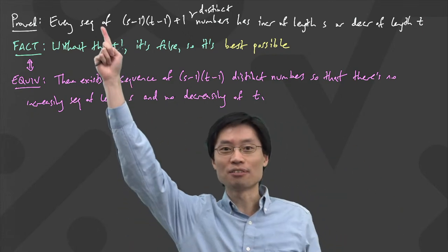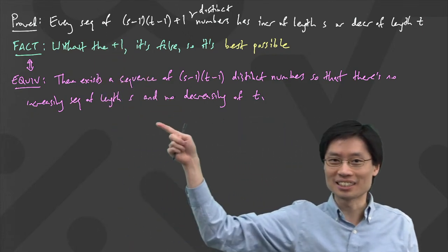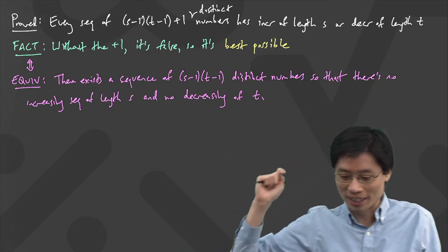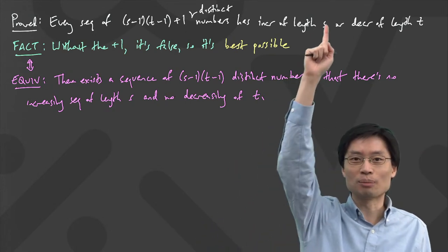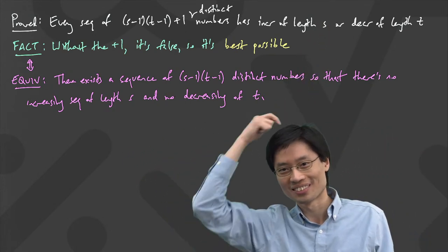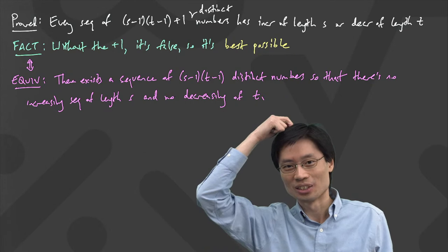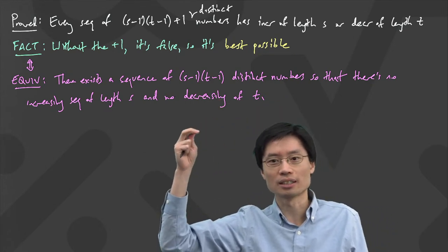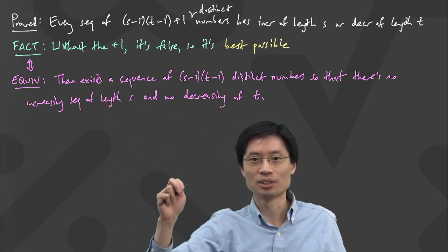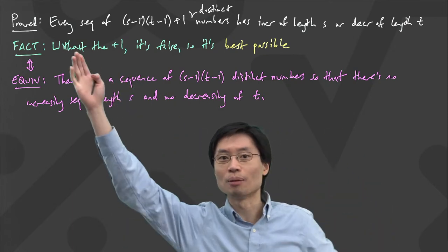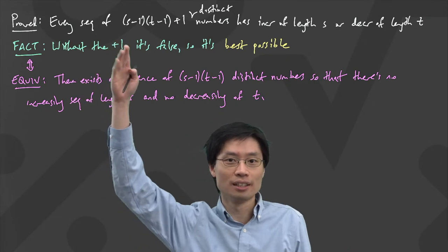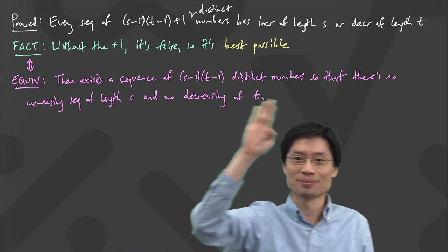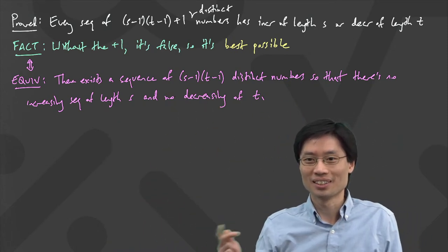That's actually why this is best possible. If you go and Google around for the Erdős–Szekeres theorem, you will almost definitely see it in the form (s − 1)(t − 1) + 1. I personally find it impossible to remember this formula — I always get the minus or the plus wrong. But it's easier to think of that there's a square-root relationship, and it all comes from the fact that you look at these pairs.